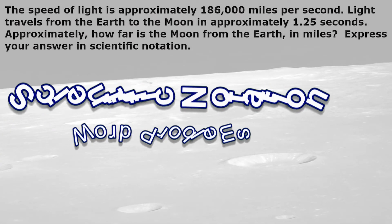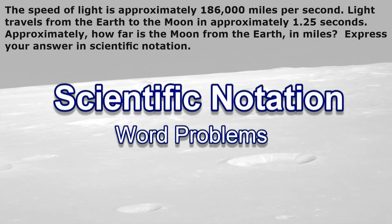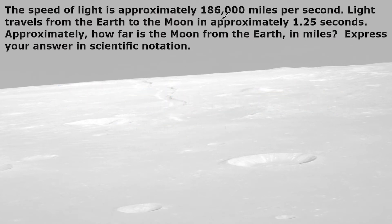In this tutorial, we are going to solve word problems which involve scientific notation. This problem reads that the speed of light is approximately 186,000 miles per second. Light travels from the Earth to the Moon in approximately 1.25 seconds. Approximately how far is the Moon from the Earth in miles? Express your answer in scientific notation.